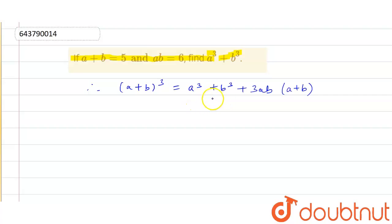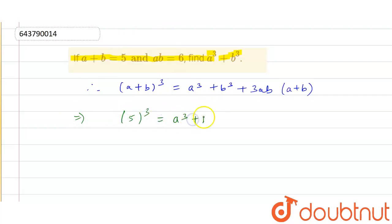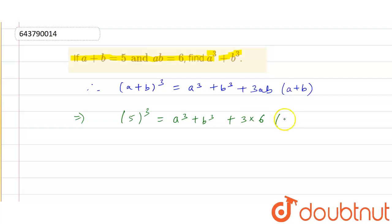So we can easily find the value of a cube plus b cube. Now by putting values, we get a plus b whole cube, that is 5 whole cube, is equals to a cube plus b cube plus 3 multiplied by ab which is 6, and in the bracket a plus b which is 5.